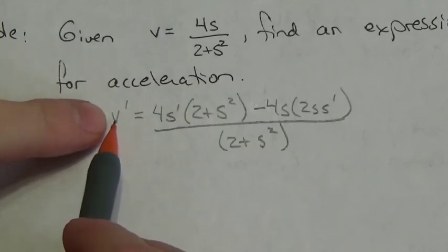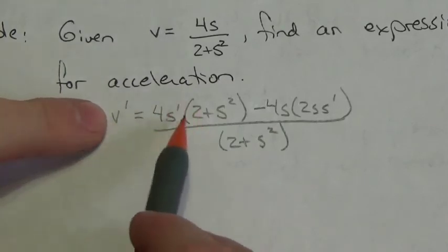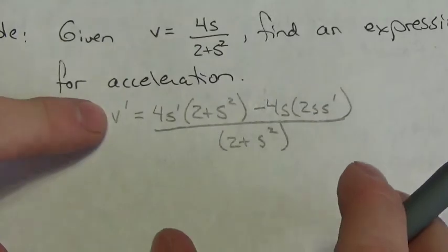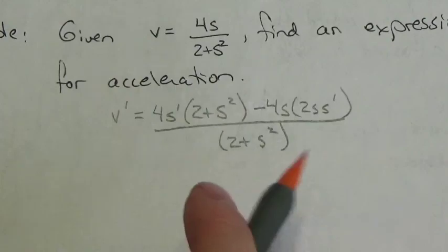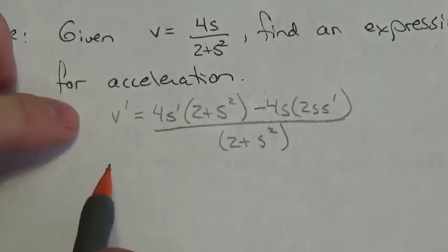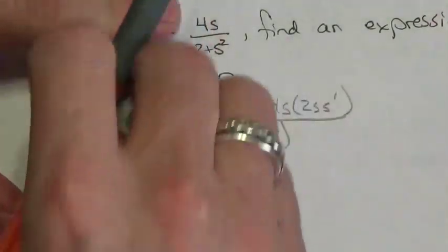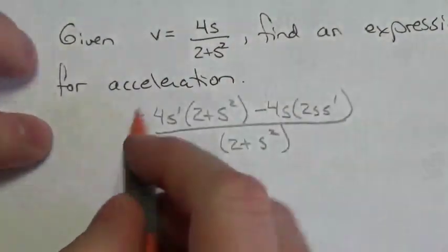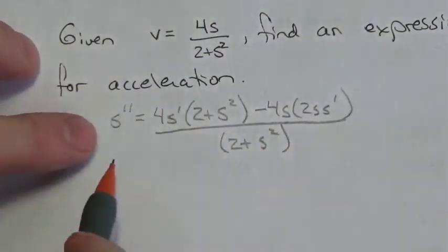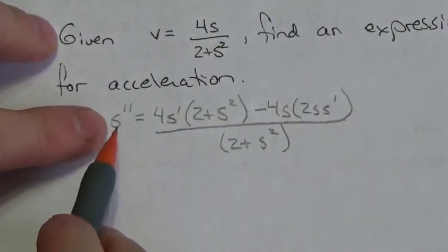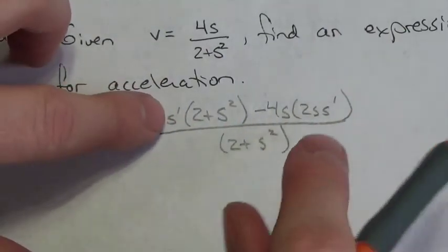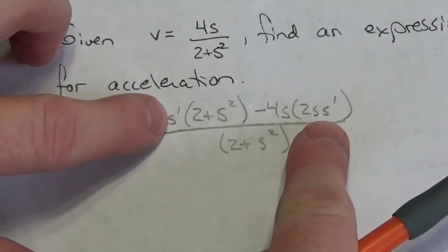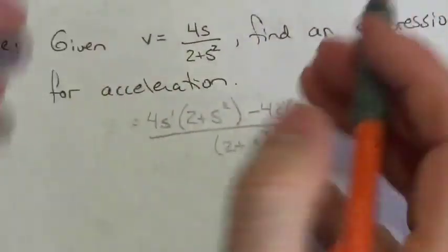Now it would be normal for us to want to rewrite the primes in terms of expressions I know they're equivalent to. But I want to point out that I've got a derivative here equal to other derivatives, and I don't actually like that. v′ is equal to s double prime — when I take a second derivative, I don't usually like to write it in terms of first derivatives. So I actually want to get rid of those s′ terms.